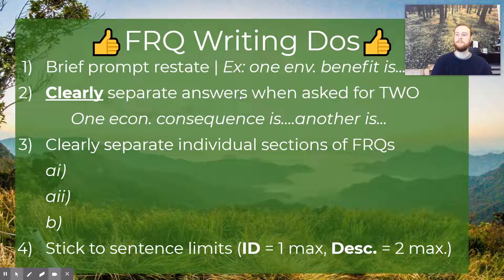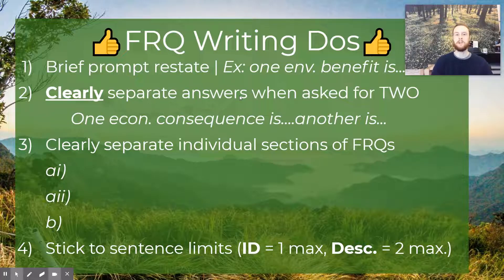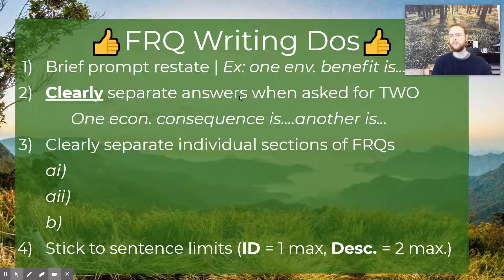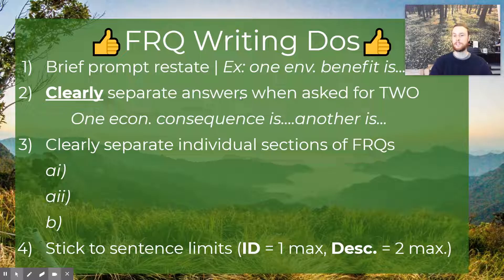Also clearly separate the individual sections of FRQs. A lot of times students will write one block paragraph, which is really challenging for a reader to make sense of. Your reader will still score it, but it's so much easier if you clearly signify 'here is letter A part one, here's letter A part two,' and so forth. Finally, stick to those sentence limits. Students are often tempted to provide extra details on an 'identify' or go into three to five sentences on a 'describe,' or slip into environmentalism, saying things like 'how can these greedy corporations pollute the air.' Those ideas will never earn you points on an FRQ — stick to environmental science, not moral judgments.